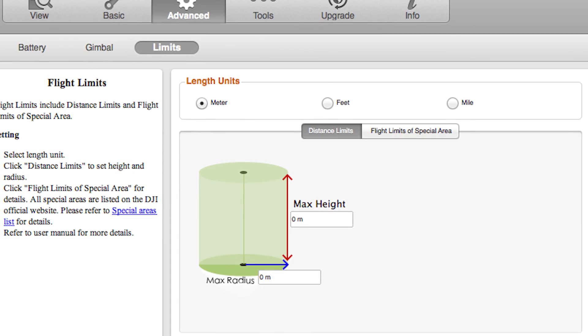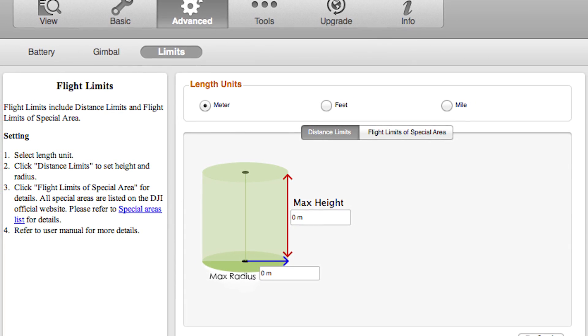The second feature of the safety update is the ability to set your Phantom's height and distance limits. The default height limit has been set to 1,300 feet or 400 meters, and the default distance limit has been set to 1 mile or 1.6 kilometers. You can adjust these flight parameters to fit local flight regulations using the Assistant software.